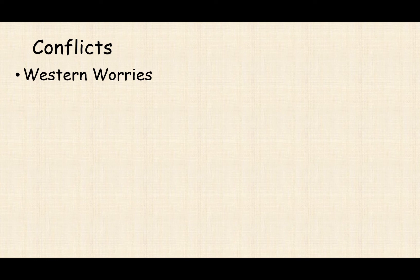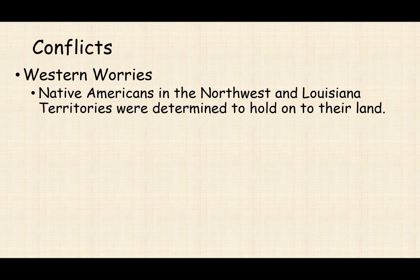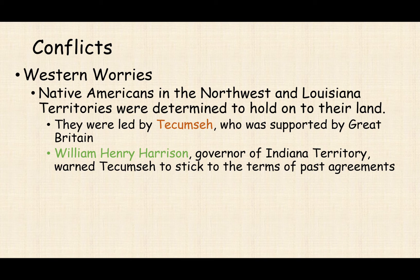Problems emerge on the western border. Native Americans in the Northwest and Louisiana Territories are determined to hold on to their ancestral lands. They see Americans as steamrolling over their territory. Led by Tecumseh, and supported by Great Britain — which is up in Canada — they fight back. Great Britain is essentially supporting Native Americans against the United States, even if by proxy.